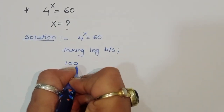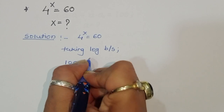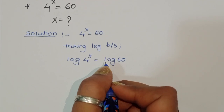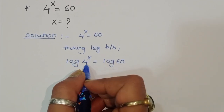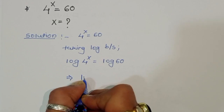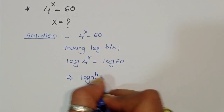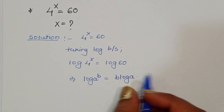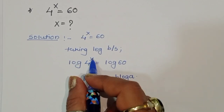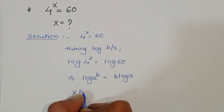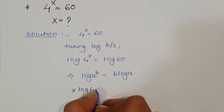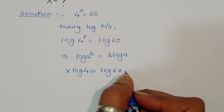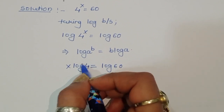So log of 4 power x is equal to log of 60. Now using the formula log of a power p is equal to p times log of a, we get x times log of 4 is equal to log of 60.